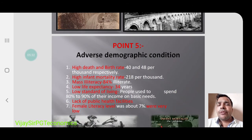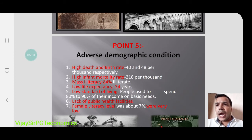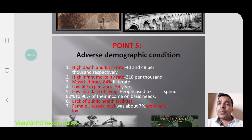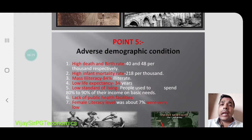Regarding adverse demographic conditions — demographic conditions are basically related with the population condition at that time. At the time of independence there was a high death rate and high birth rate. The high infant mortality rate was 218 per thousand, meaning out of 1,000 children born, 218 died. Low literacy meant 84 percent of people were illiterate. Life expectancy was only 34 years on average. Female literacy was very low — around only 7 percent of females were literate at that time.